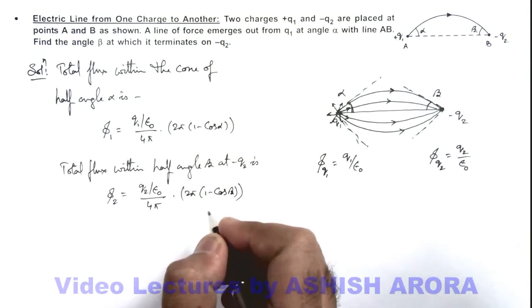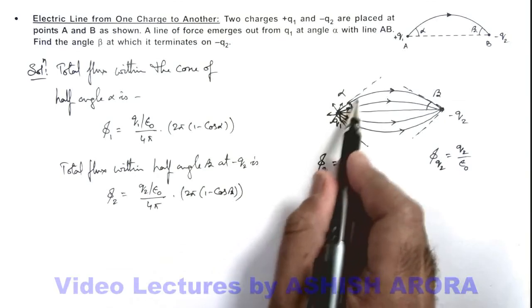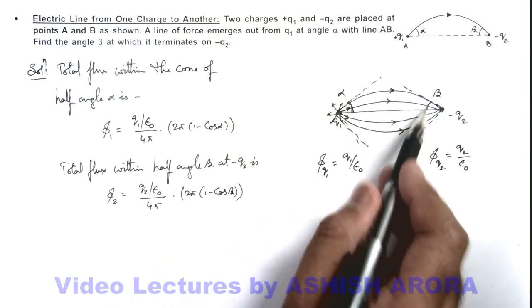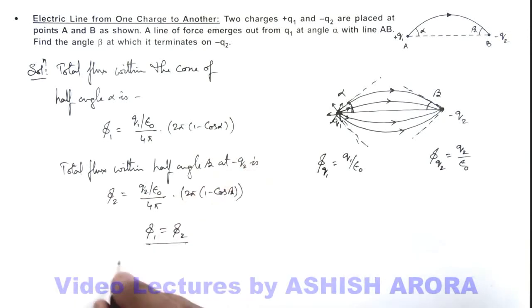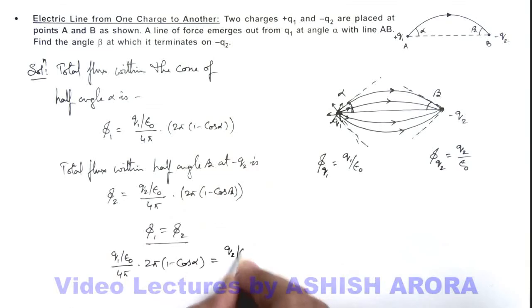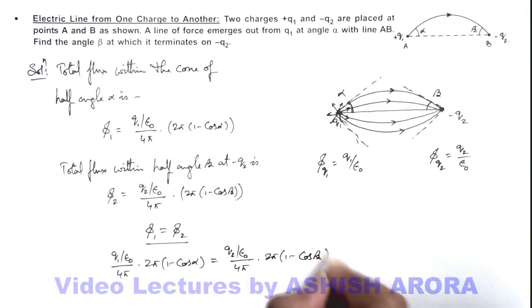And here, as all the flux within this cone is equal to the flux within this cone, we can write phi 1 is equal to phi 2, which gives us: q1 by epsilon not upon 4 pi multiplied by 2 pi (1 minus cos alpha) is equal to q2 by epsilon not upon 4 pi into 2 pi (1 minus cos beta). Here you can see these all values get cancelled out.